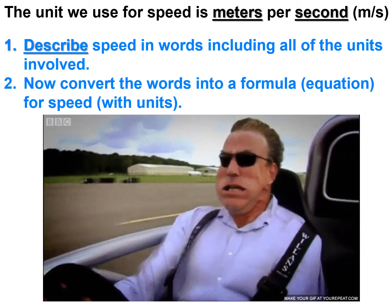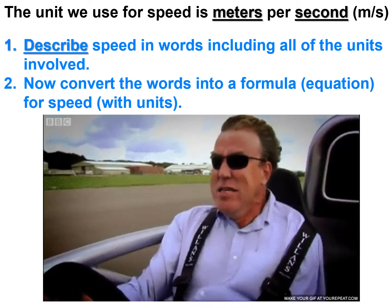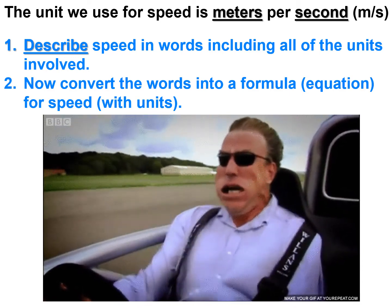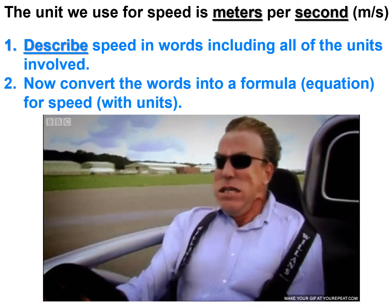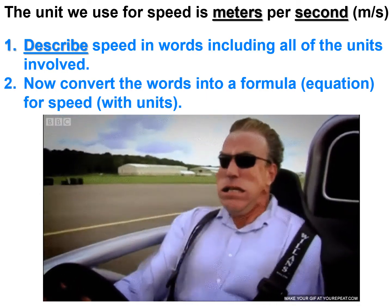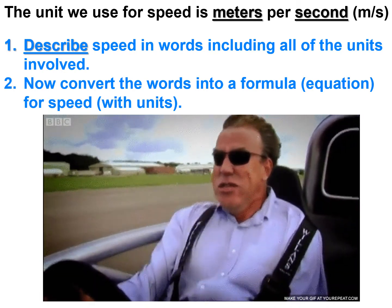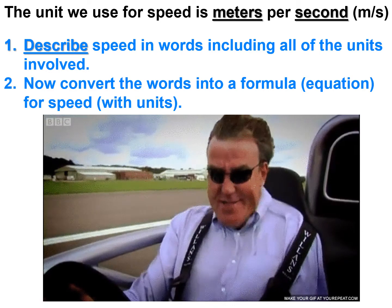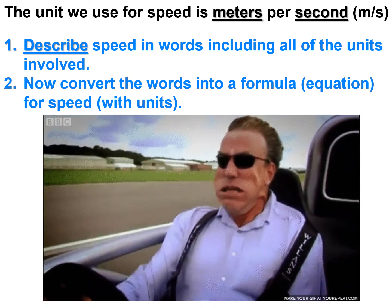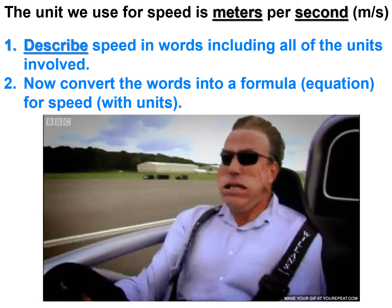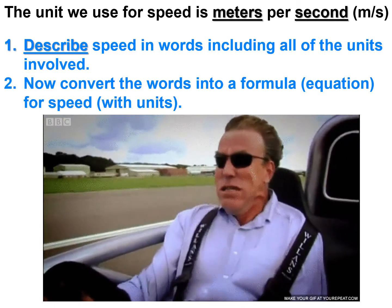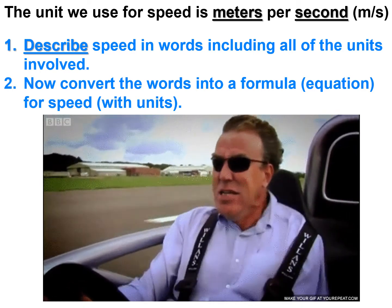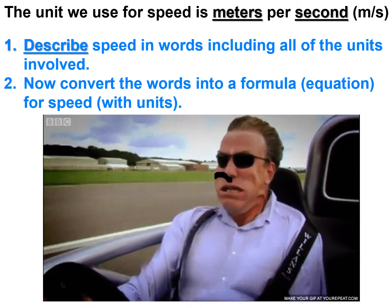In physics the unit we use for speed is meters per second. The faster you're going, you cover more meters in fewer seconds — it really is that straightforward. You go a greater distance in a short space of time; conversely if you're going slowly it takes longer to cover the same distance. At key stage four we need to know the formula triangle to manipulate it. Distance, which was 'd' in year seven, is now 'x' — that's something important to remember going forward.